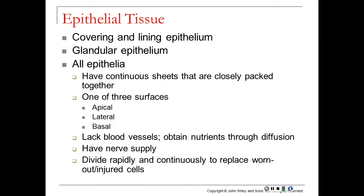Epithelial tissues are the coverings and linings of the body. Glandular epithelium includes sweat glands, oil glands, and mammary glands. All epithelial tissues share the same characteristics: they form a continuous sheet of closely packed cells with three surfaces — the apical surface on top, a lateral surface on the side, and a basal surface on the underside.